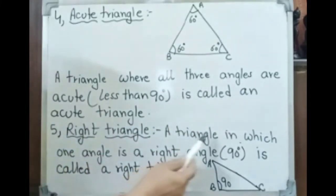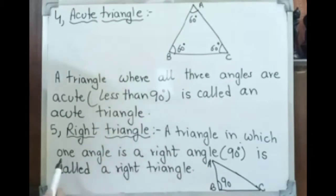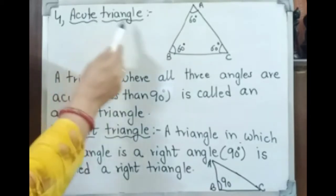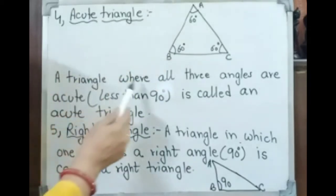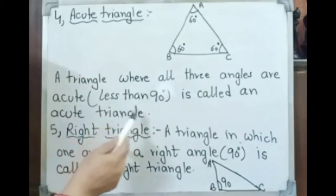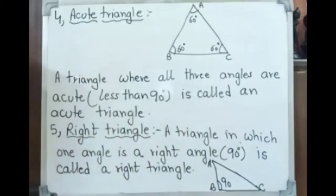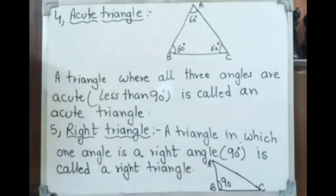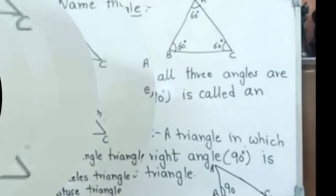Right triangle — a triangle in which one angle is a right angle, meaning 90 degrees, is called a right triangle. An acute triangle is one where all three angles are less than 90 degrees. A right triangle is one in which one angle is 90 degrees.